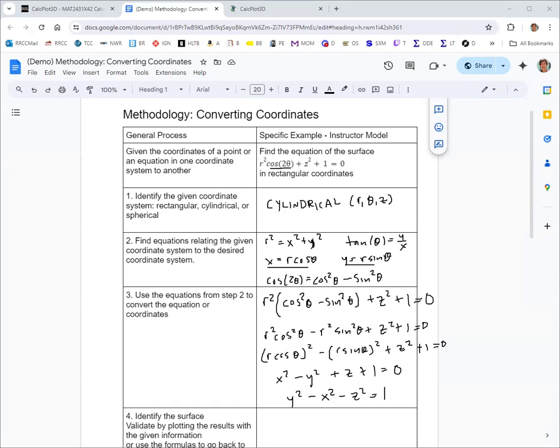If not, that will come up in the validation where we plot the results from both. So we plot the coordinates or equation in both coordinate systems.